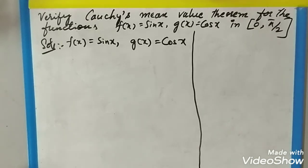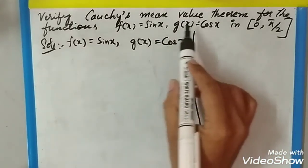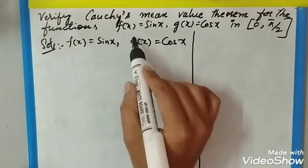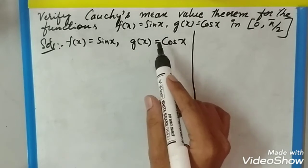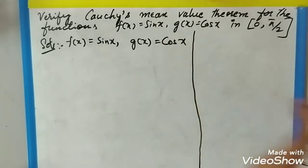Hello students, today we are going to see a problem on engineering mathematics: verify Cauchy's mean value theorem for the functions f(x) = sin x, g(x) = cos x in the interval [0, π/2].